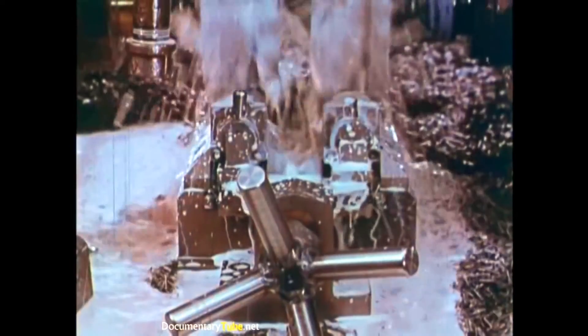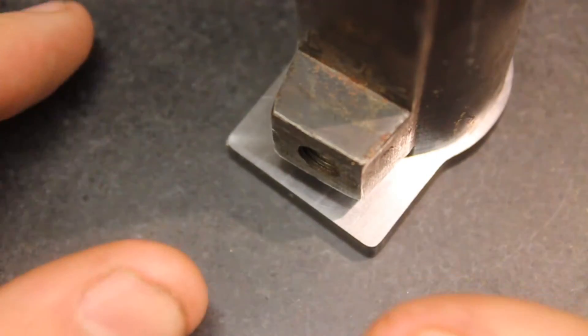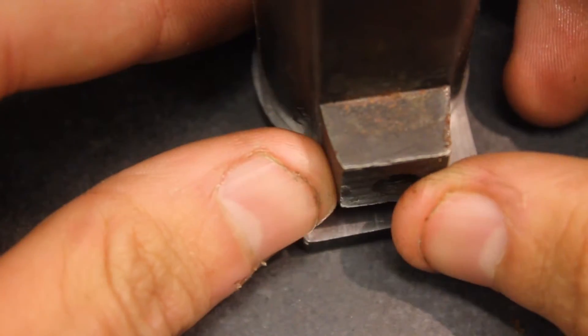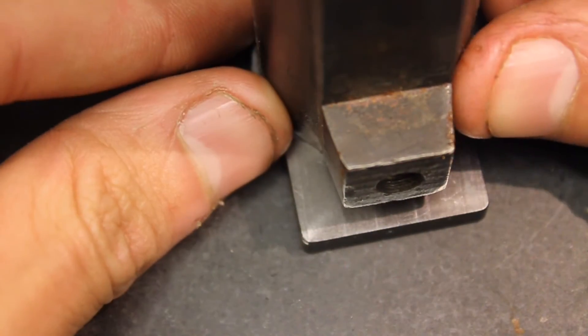Lugs that are not integral certainly have their own advantages. They allow for easier machining and thus lower cost. They allow a shooter the option to upgrade to a thicker recoil lug to add rigidity. They are usually taller than their integral counterparts, adding more area to displace energy.